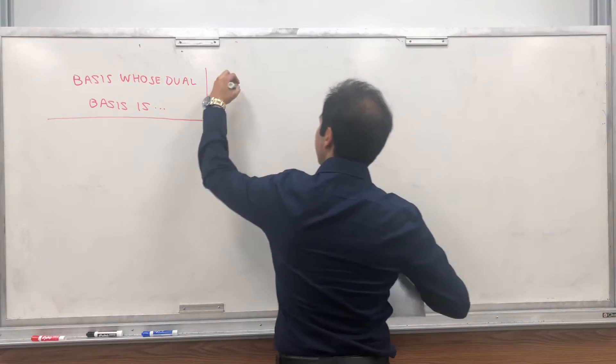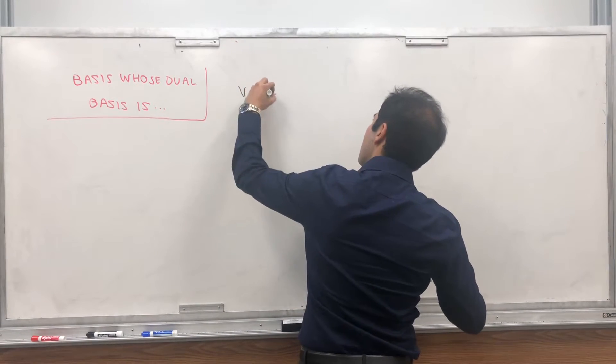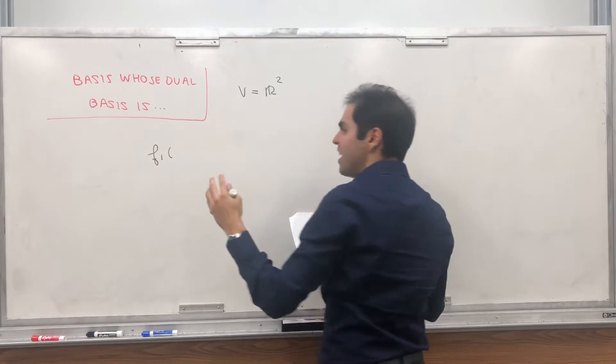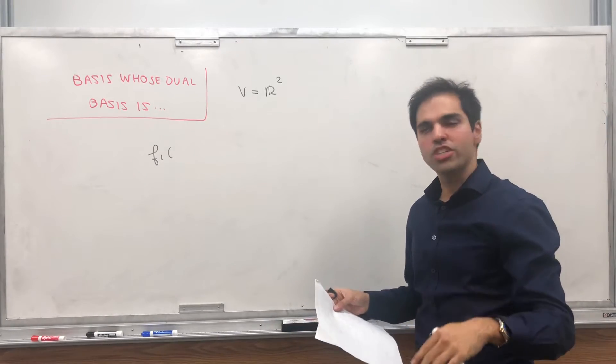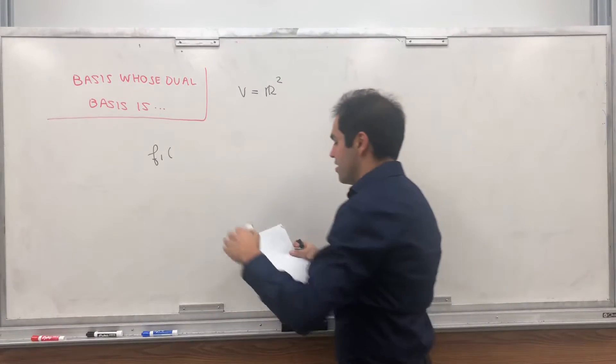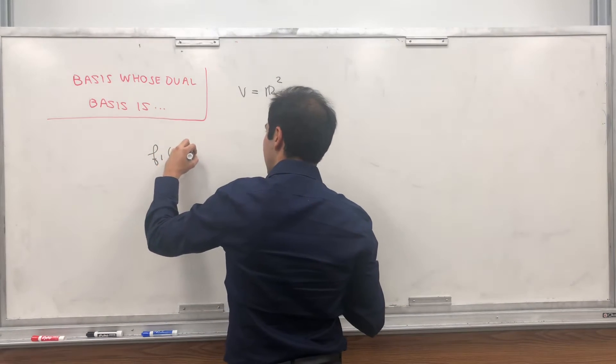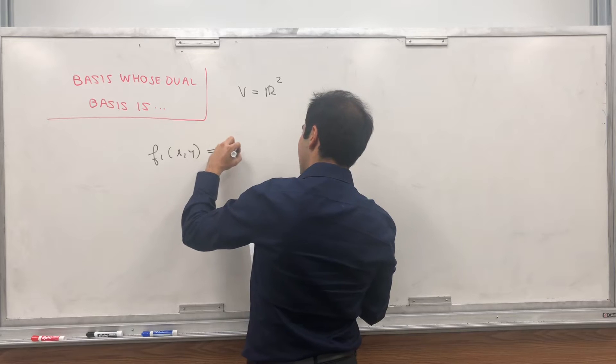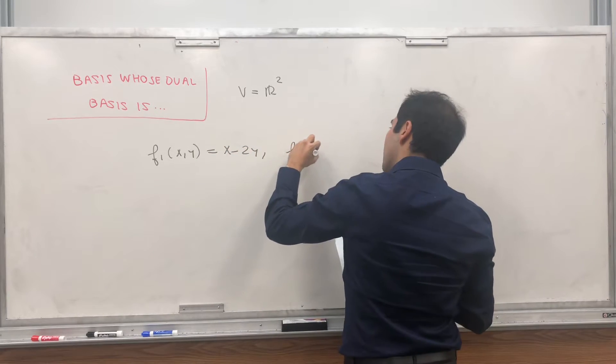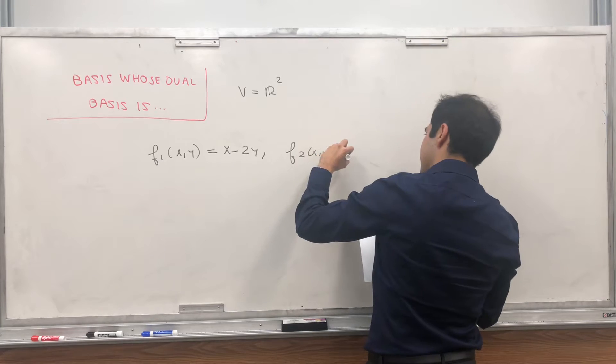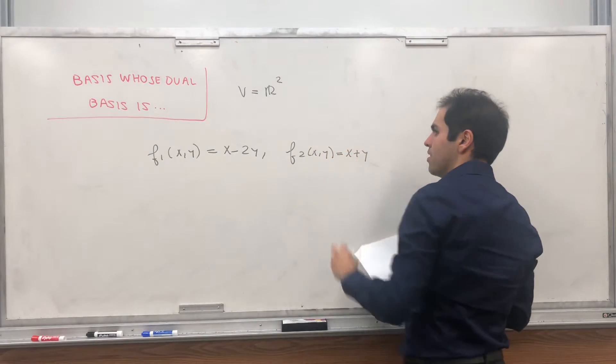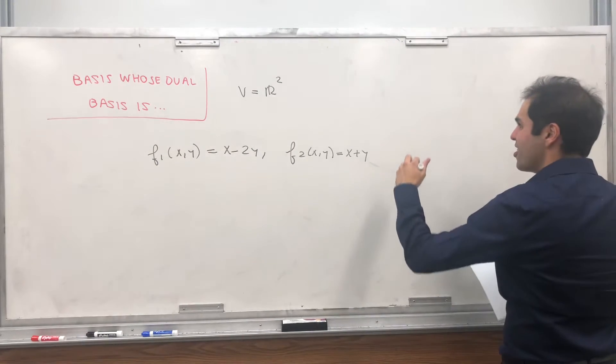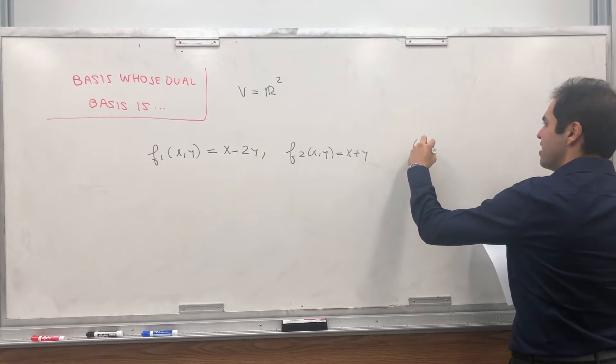So in this case, let V be R2. And let's consider the following functionals, which again are just linear transformations from V to the field. So here, for example, it's scalar functions. So f1 of xy is x minus 2y, and f2 of xy is x plus y. So those are linear transformations from V to R, so in particular, those are in V star.